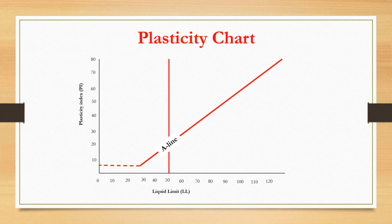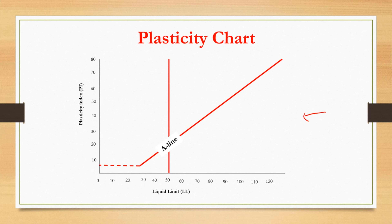After carrying out both liquid limit and plastic limit, the results are further analyzed to enable cohesive soils to be classified and the probable type of fine-grained soil to be assessed. Classification is usually accomplished by means of a plasticity chart. The classification of fine-grained soil is achieved by referring to the A-line, where any point above the A-line is considered clay while below the A-line is silty soil.